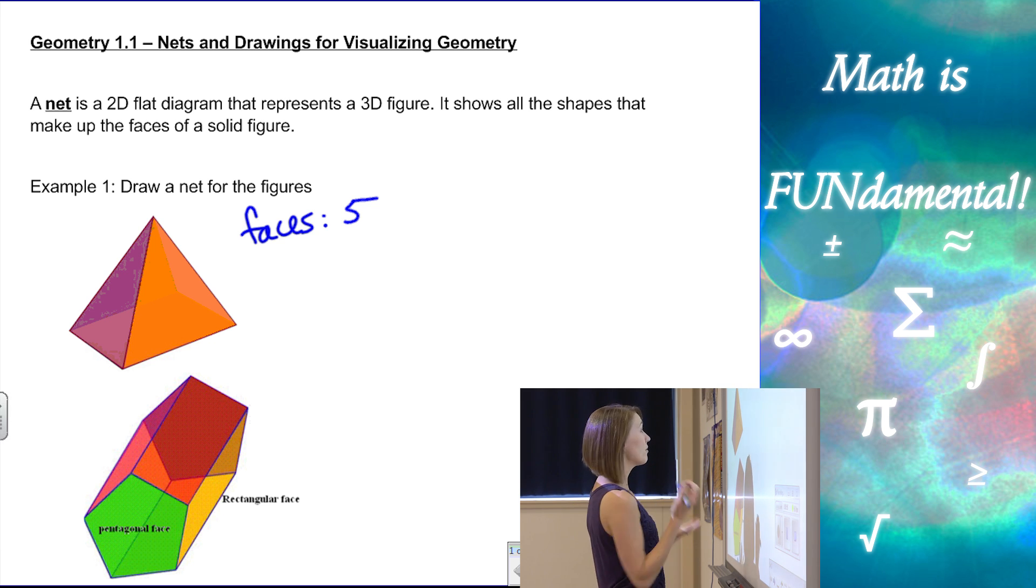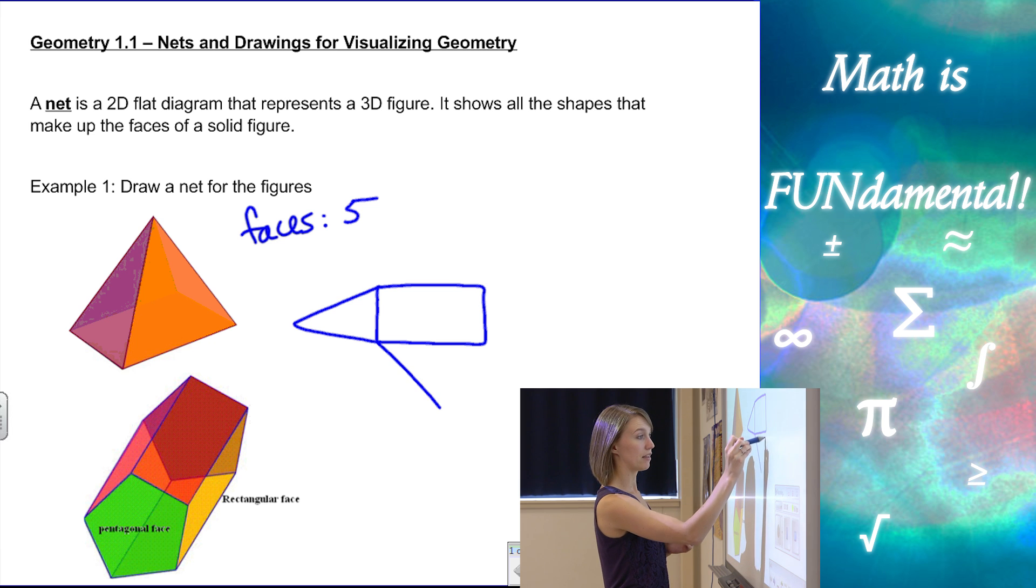We can start with whatever shape we want. I like to start with the bottom one usually. Here I'm going to start with our rectangle, and then from each side of our rectangle, we have triangles coming out like this. And they don't have to be perfect, but try to make them as nice as you can.